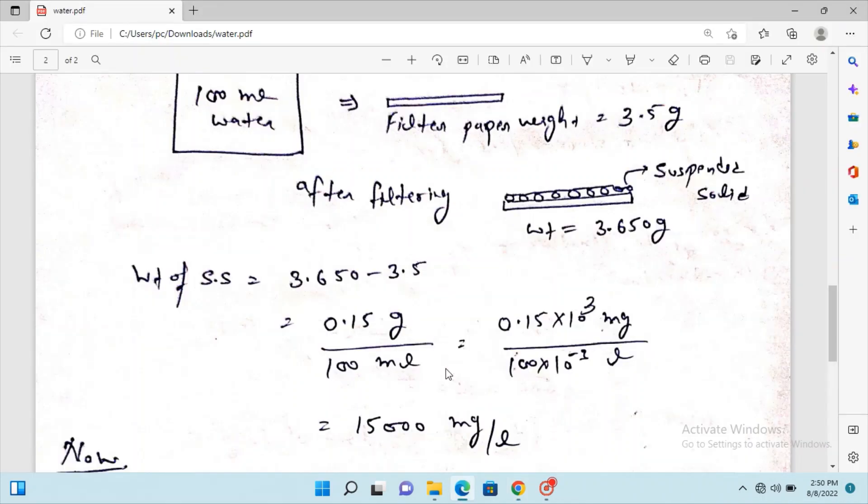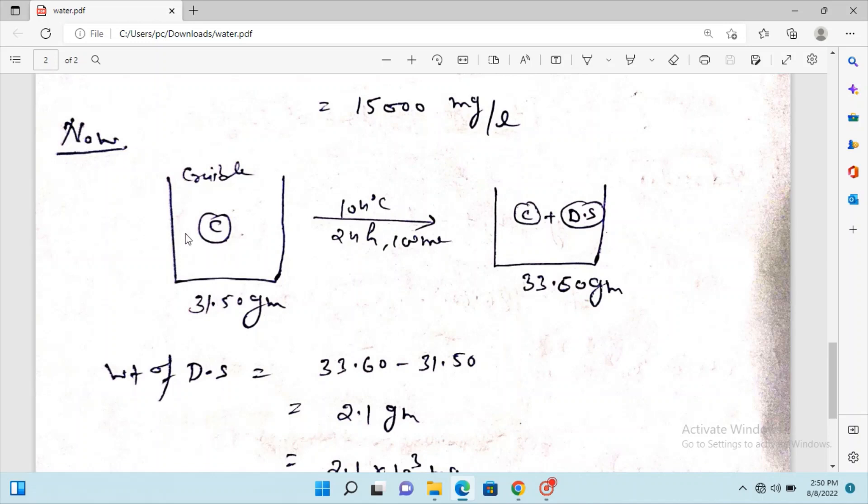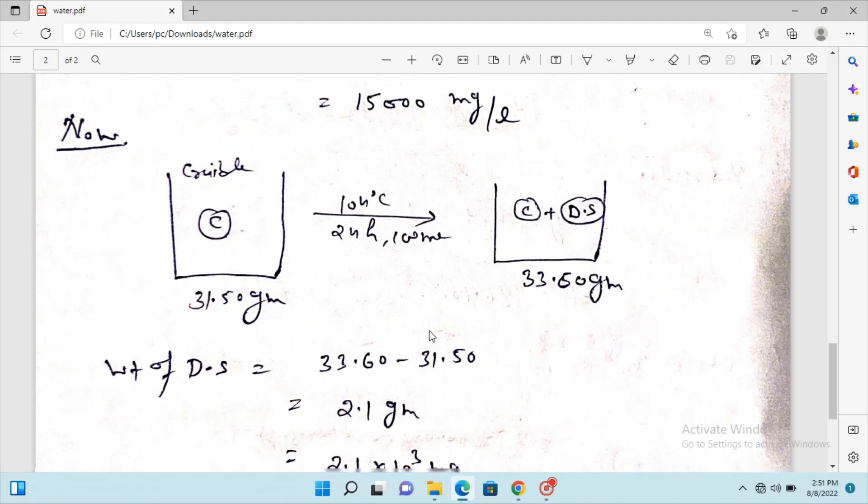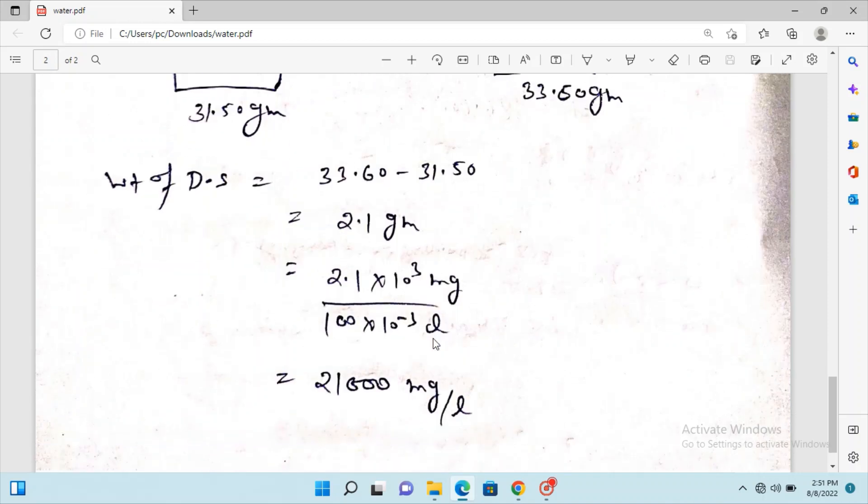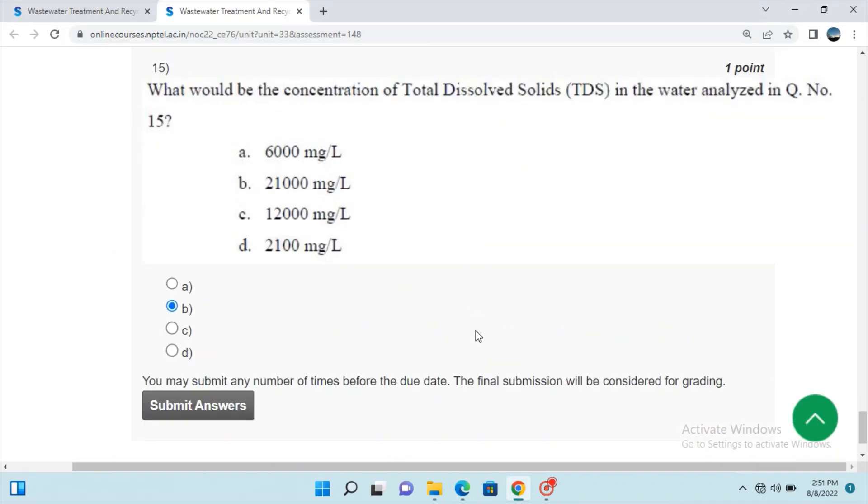For question 15: The initial crucible weight is 31.5 grams, and after drying it's 33.6 grams. After drying, residual solids appear and the weight increased. Subtracting the initial crucible weight, we get the weight of the residual solids as 2.1 grams. Converting to milligrams per liter gives 21,000 milligrams per liter. This is the answer to question 15.